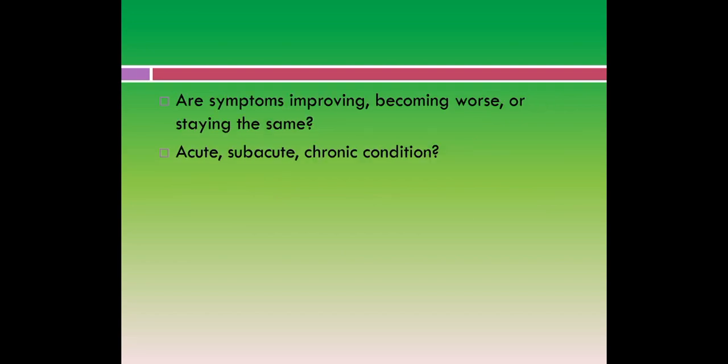Are the symptoms improving, becoming worse, or staying the same? This can tell us whether the condition is acute, subacute, or chronic. If the patient has a chronic condition, they may report that the pain or disability has been present for a long time with no improvement.